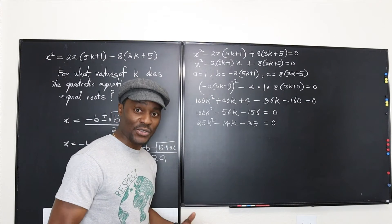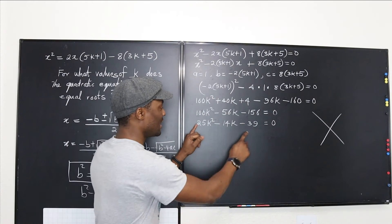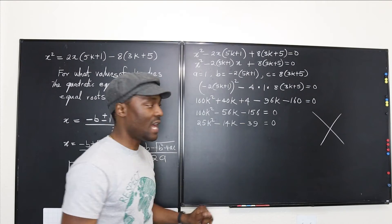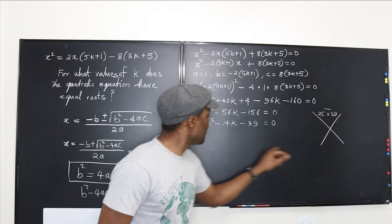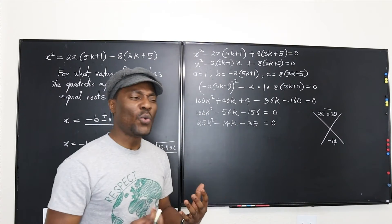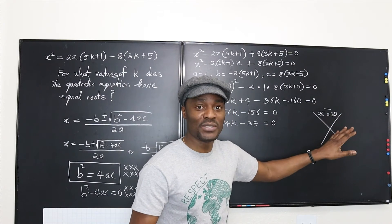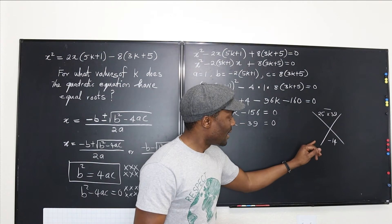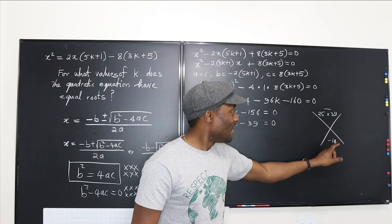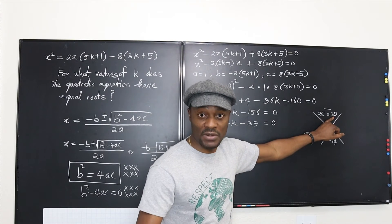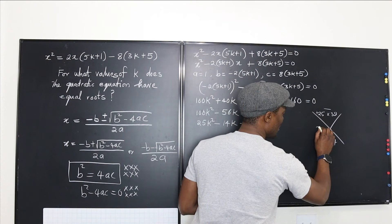I recommend always trying factoring when you have a quadratic equation. I need to create a puzzle: multiply the leading coefficient by the constant term — that's 25 times negative 39, which is negative 975. Under here I have the middle term, which is negative 14. I need two numbers that multiply to −975 and add to −14. The difference between 25 and 39 is 14, so those are the factors. Since it has to be negative, the bigger number must be negative: positive 25 and negative 39. So I replace negative 14k with +25k − 39k.